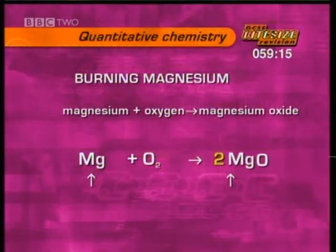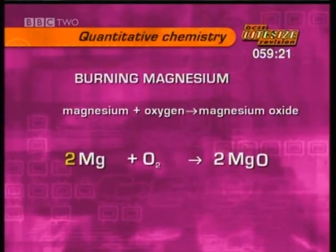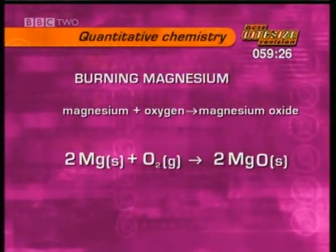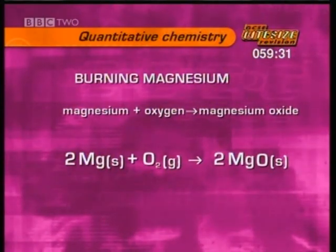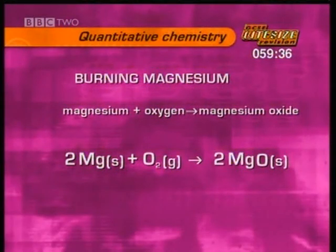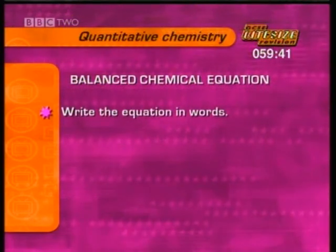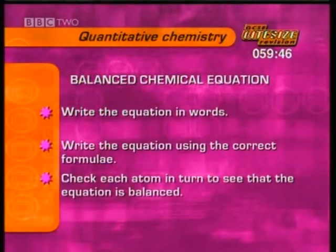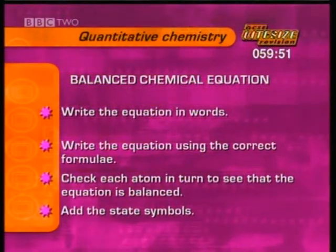To balance the magnesium, we need two magnesium atoms on the left of the equation. Finally, add the state symbols for solid, liquid, gas, or aqueous solution. The final balanced chemical equation for magnesium burning is: 2Mg(s) + O₂(g) → 2MgO(s). The steps are: write the equation in words, write it using correct formulae, check each atom to ensure it's balanced, then add state symbols.